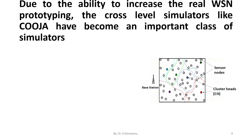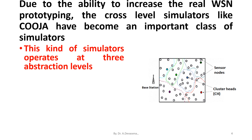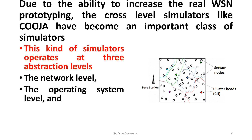Due to the ability to increase the real WSN prototyping, the cross-level simulators like Koja have become an important class of simulators. This kind of simulators operates at three abstraction levels: the network level, the operating system level, and the machine code instruction set level.